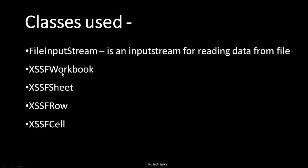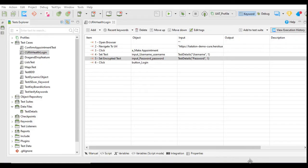The key to write or read an Excel file in any programming language is to access it in a specific format. That format is: first we access the workbook, then we access a specific sheet from that workbook, then we access the row, and then the cell or column. Let's learn how to do that in this tutorial.